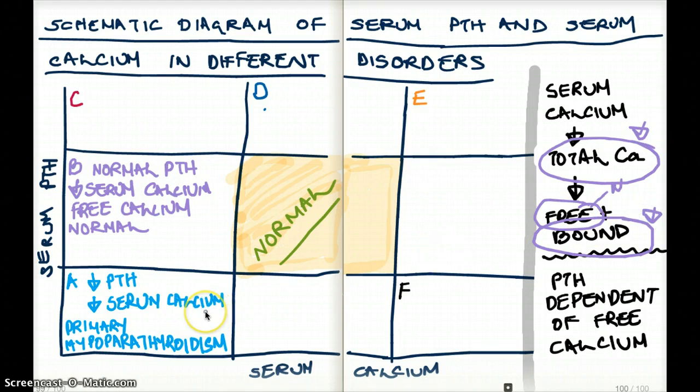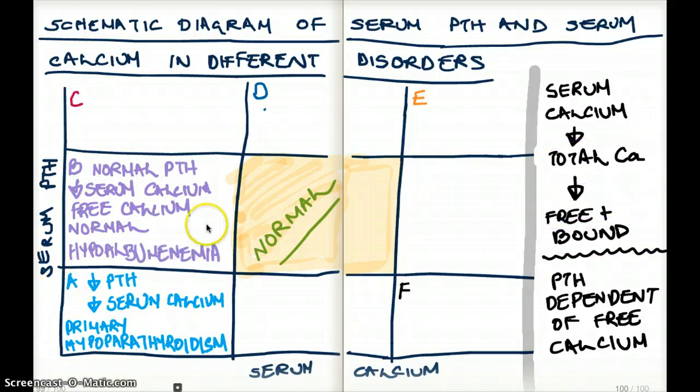The bound calcium must be low, so when do we have that? And what is bound to calcium, what protein binds to calcium? That protein is albumin. So that means we are having hypoalbuminemia in box B.